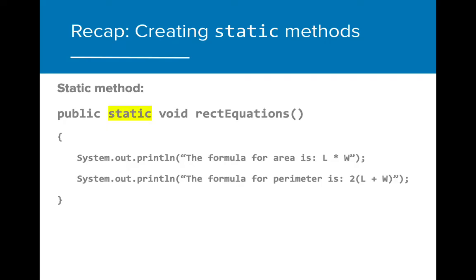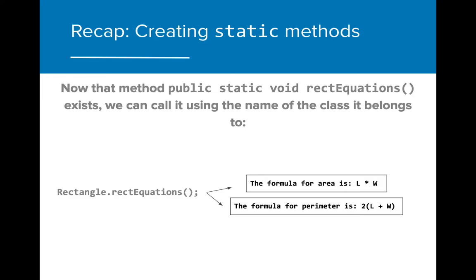If we wanted to create a method that reminded us of the different equations that we could use with rectangles, we could create a static method that printed both the formula for area and perimeter. Now that method public static void rectEquations exists, we can call it using the name of the class it belongs to. When rectangle.rectEquations is called, it executes the method even though there is no existing rectangle object.